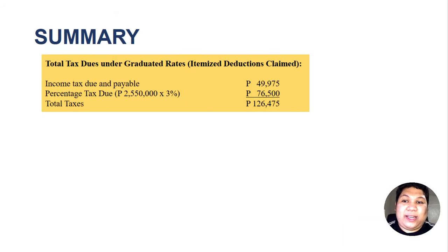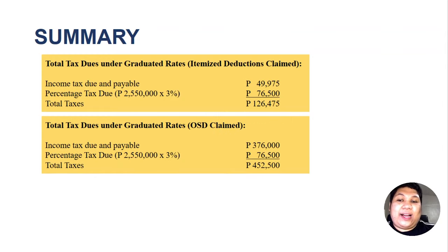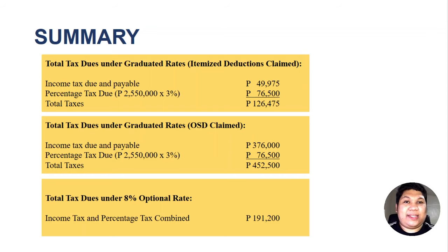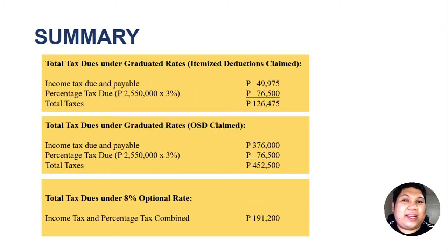Here is the summary comparison. Under graduated rates with itemized deductions, Juan pays a total of ₱126,475. Under graduated rates with OSD, the total is ₱452,500. Under the 8% optional rate, income tax and percentage tax combined is ₱191,200. In this case, Juan should better choose graduated rates under itemized deductions. I hope you learned a lot from this video. Thank you so much.